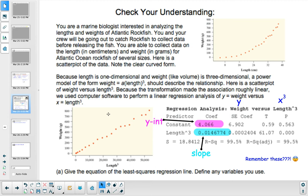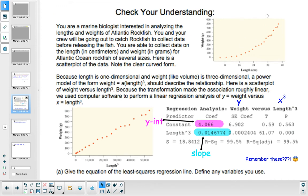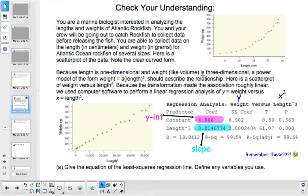You and your crew will be going out to catch rockfish to collect data before releasing the fish. You are able to collect data on the length in centimeters and the weight in grams. Here's a scatterplot of the data, and it has a clear curved form - nonlinear data.